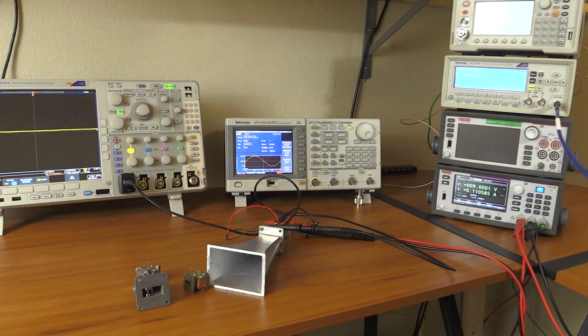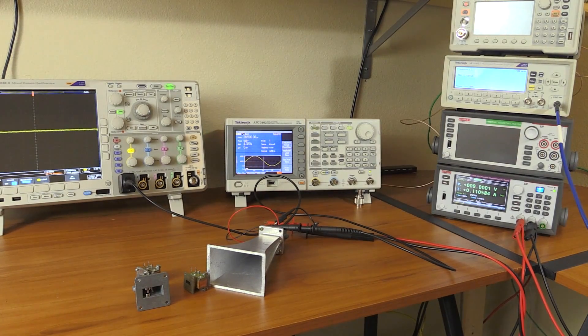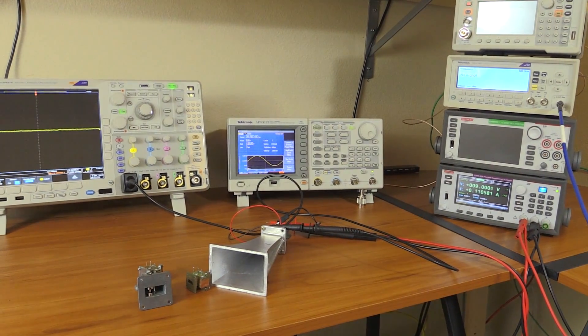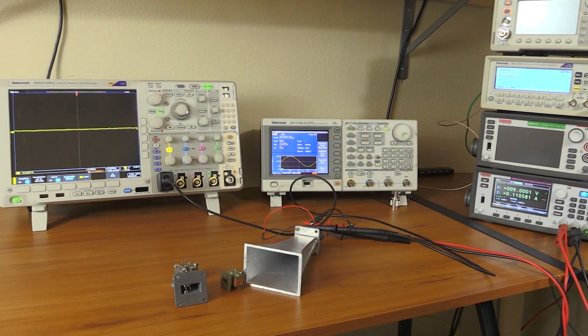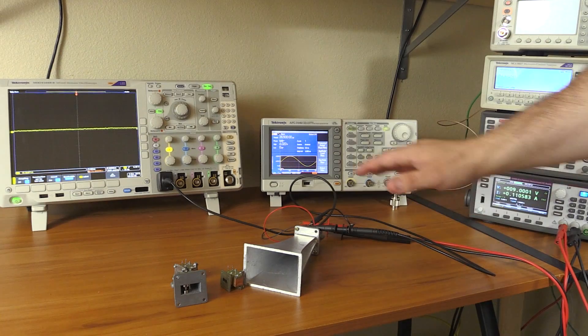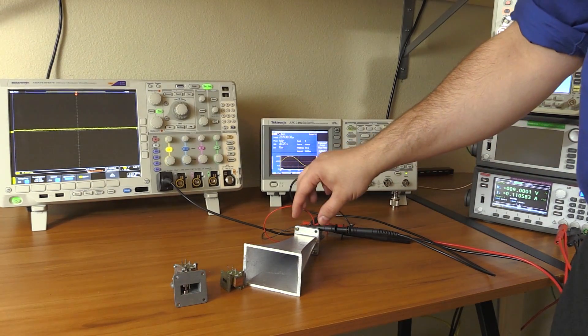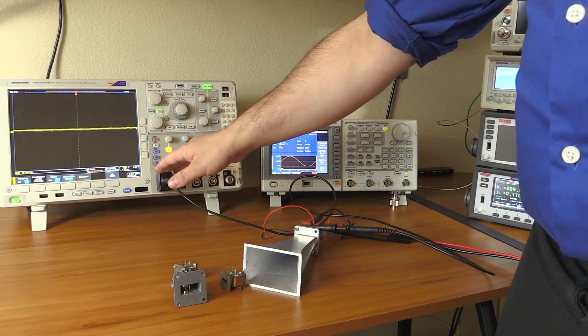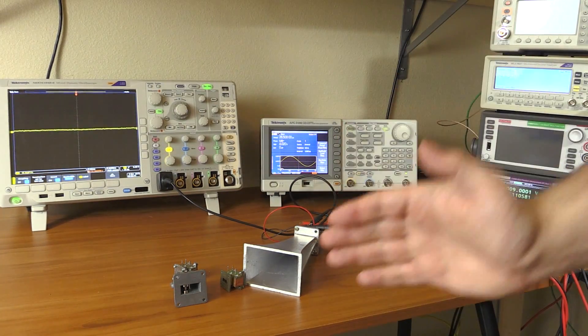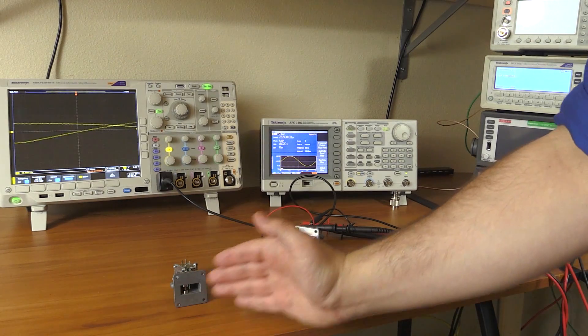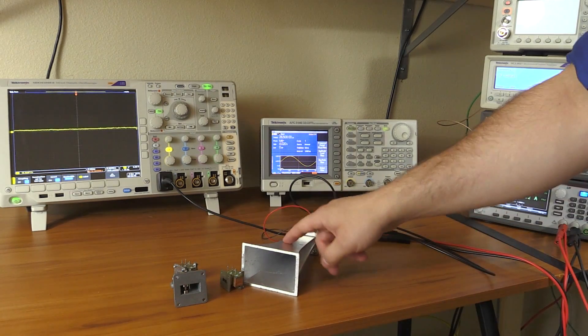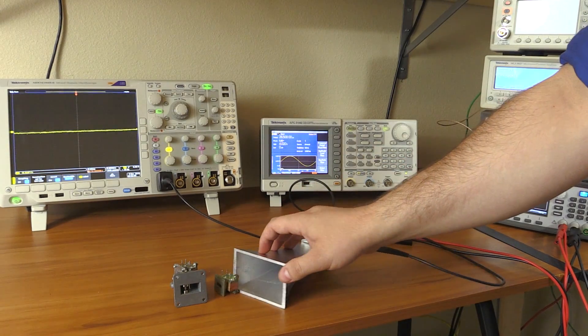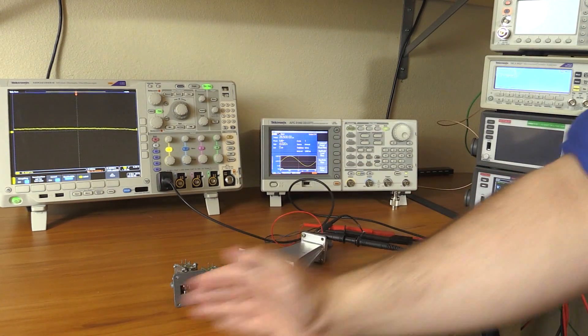Now look at the oscilloscope. The setup is: power supply goes into the gunplexer, and the mixer diode port is tapped here into this oscilloscope channel one. Now watch what happens when I move my hand in front of the gunplexer. I have a big horn antenna on here, obviously, but it's the exact same gunplexer that I've already shown you. Watch this.